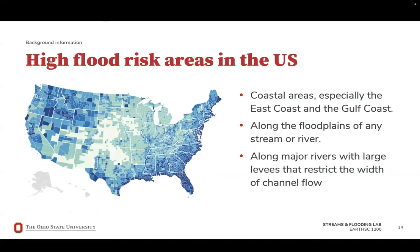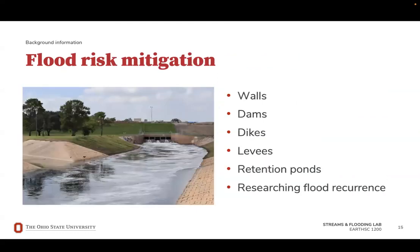Because floods are increasing in both frequency and severity due to climate change, it's important to know general areas of high flood risk in the US. This map shows areas in the continental US that have spent the most money on flood damages in the last 15 years — the darker the blue, the more money that's been spent. Areas of special concern include coastal areas, particularly the East Coast and the Gulf Coast, and along floodplains of streams and rivers, particularly those that have been engineered to restrict the width of the channel flow. To mitigate floods, engineers have developed structures such as flood walls, dams, dikes, and levees. By collecting data such as stream discharge and velocity, scientists can create rating curves to predict how high flood waters will reach and how often floods of certain magnitudes will occur. Understanding stream systems can lead to better preparedness for future flooding events.